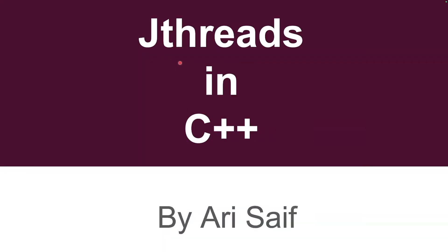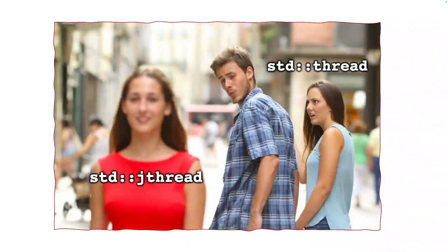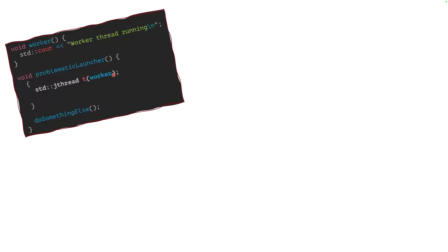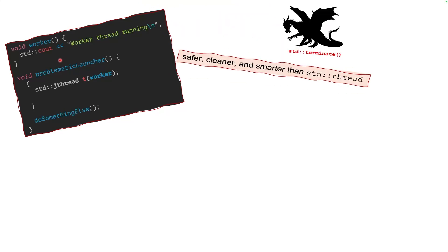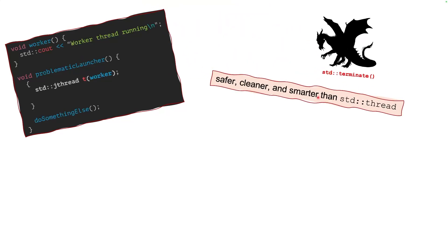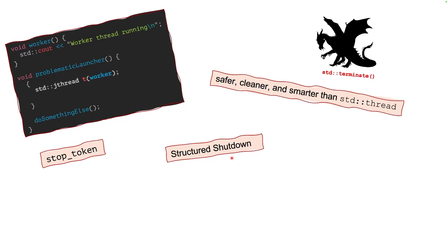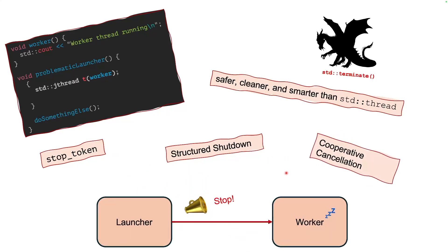Welcome to my video on jthread in C++. In this video, I'll teach you all the cool features of jthread and compare that with std::thread. You will learn how to create jthreads and write programs using jthreads, and I'll show you why it's a safer, cleaner, and smarter option than std::thread. Moreover, I will talk about concepts such as stop token, structured shutdown, and cooperative cancelling between two threads. So let's dive in.